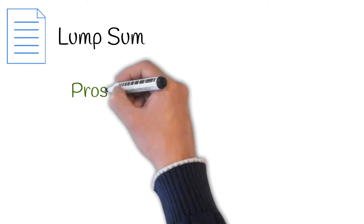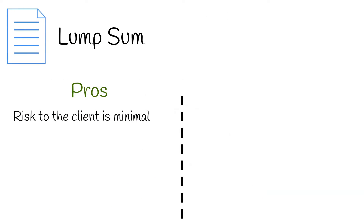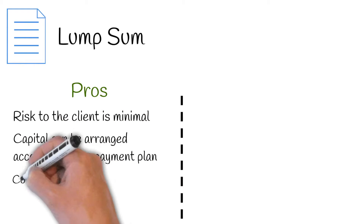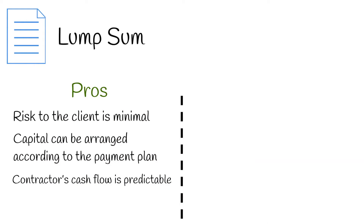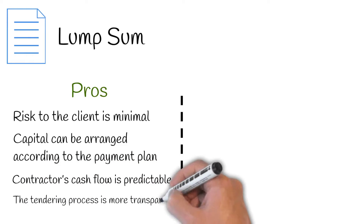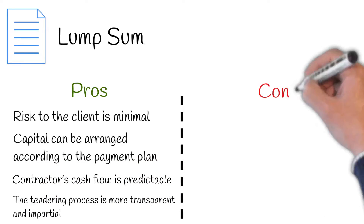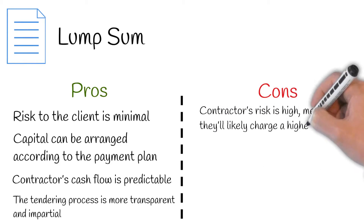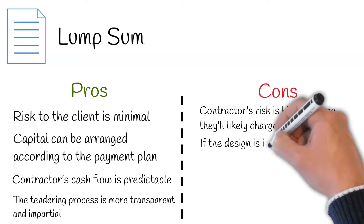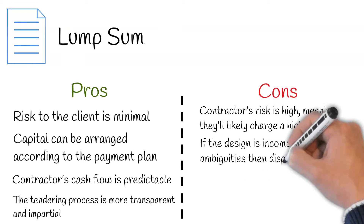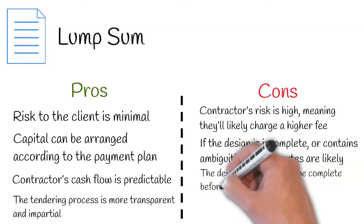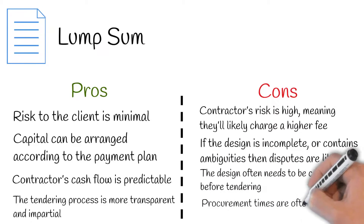Pros to this contract include: risk to the client is minimal, capital can be arranged according to the payment plan, contractor's cash flow is predictable, and the tendering process is more transparent and impartial. Cons to this contract include: contractor's risk is high, meaning they'll likely charge a higher fee. If the design is incomplete or contains ambiguities, then disputes are likely. The design often needs to be completed before tendering, and procurement times are often elongated.